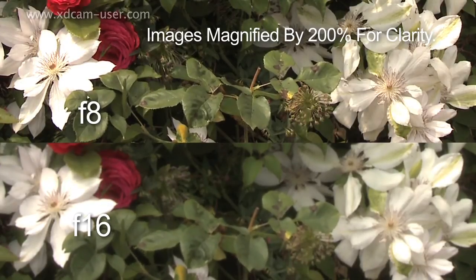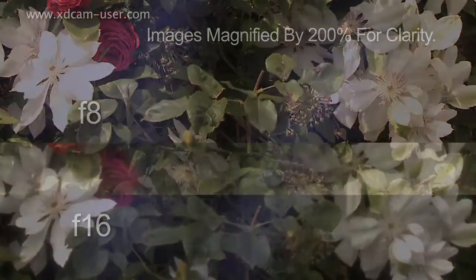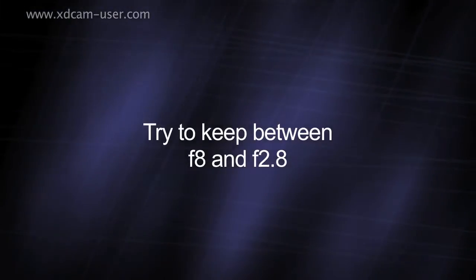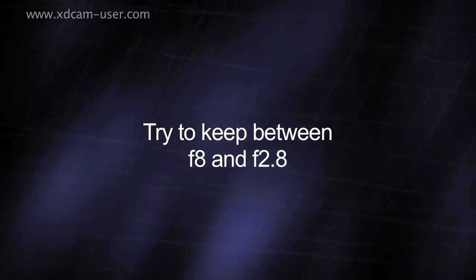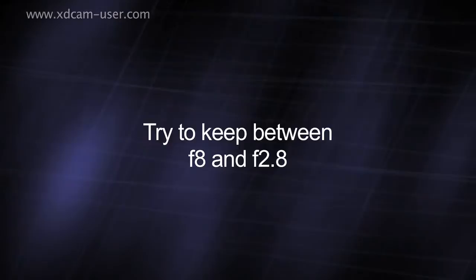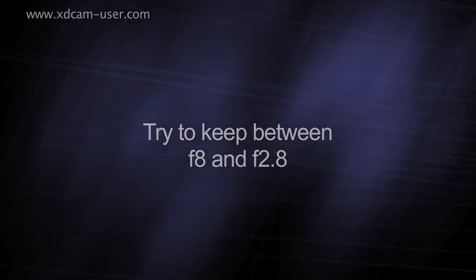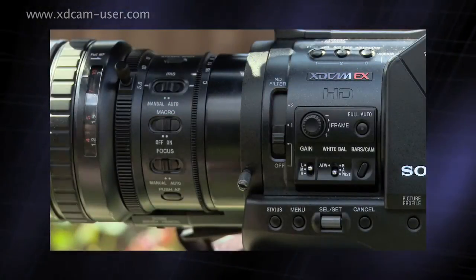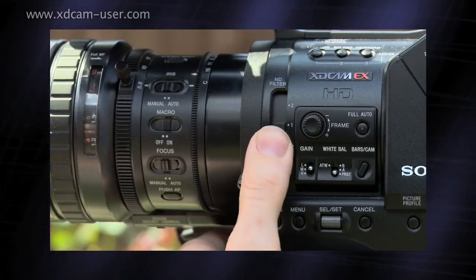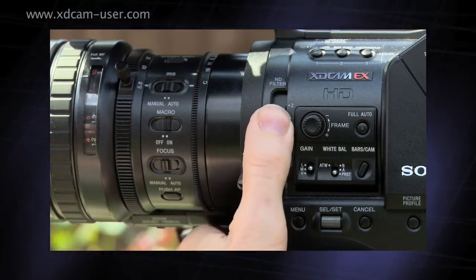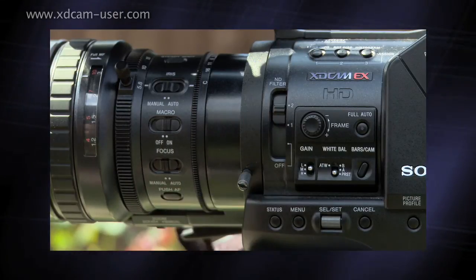To maintain the highest quality images, you should always try to keep the aperture between f8 and f2.8. You should use either the camera's built-in ND filters or external ND filters to control excess light.